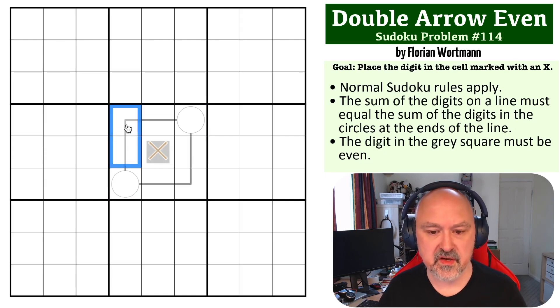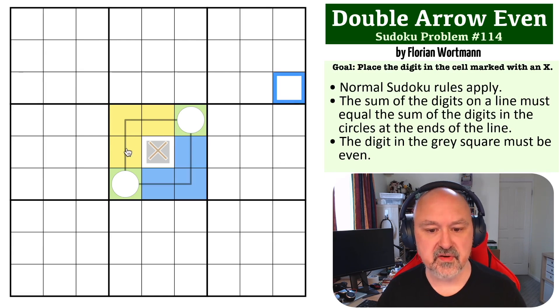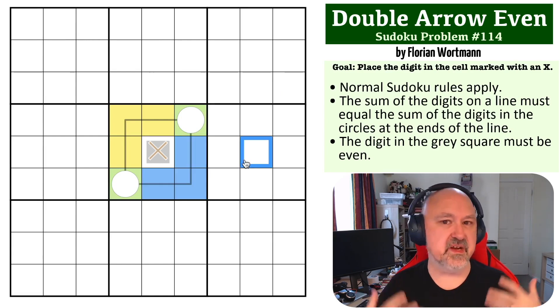What we know is yellow, green, and blue are all going to have the same total because this line must sum to the same as the arrows at the end, and the arrows at the end will sum to the same as blue. That is three times the same total, so those are going to be cells that are divisible by three.